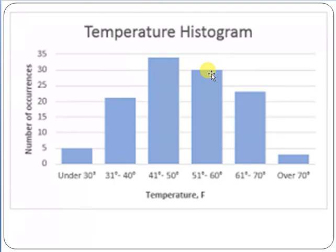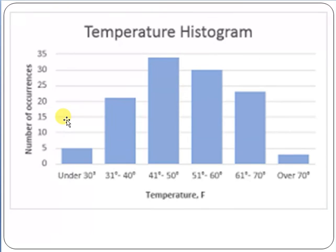It is very easy to understand the histogram and the relationship among the data it represents. Graphical representation is much easier to understand than writing a paragraph describing the same data. Showing the relationship between temperature and number of occurrences through a histogram makes it immediately clear compared to a text description in Microsoft Word.